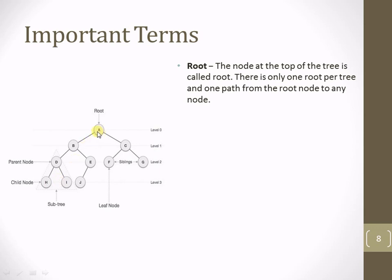A path refers to the way we access the nodes, which I will explain in detail when I cover the term path. For now, just remember that the root node is the very first or topmost node of the tree data structure. In this example, A is the root node, and every tree has a single unique root node.